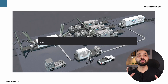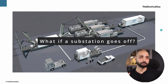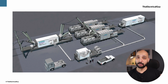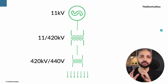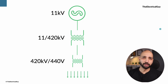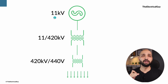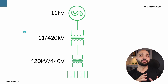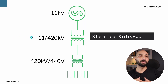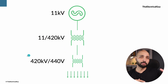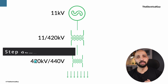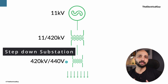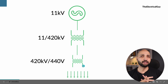Now what if any of the substations in the network goes off? It's a big problem. Consider this example: in one power system we are generating electricity at 11 kV, then there is a step-up substation stepping up to 420 kV, transmission is happening, and then we are stepping it down to 430 volts in a step-down substation and delivering power to the end consumer.